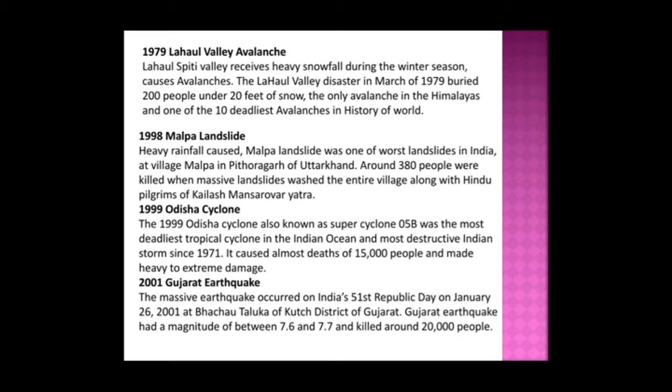The 1999 Odisha Cyclone, also known as Super Cyclone 05B, was the deadliest tropical cyclone in the Indian Ocean and the most destructive Indian storm since 1971, causing almost 15,000 deaths and extreme damage. The Gujarat Earthquake occurred on India's 51st Republic Day, January 26, 2001, at Bhachau Taluka of Kutch district. It had a magnitude of 7.6–7.7 and killed around 20,000 people.